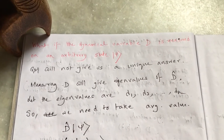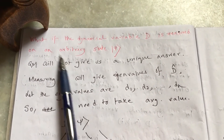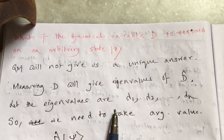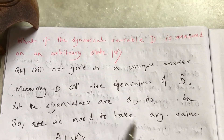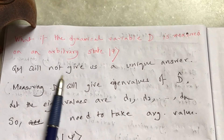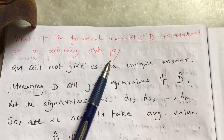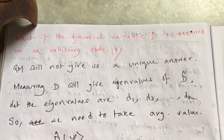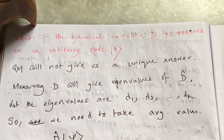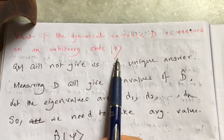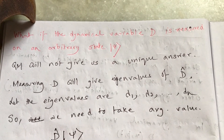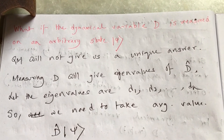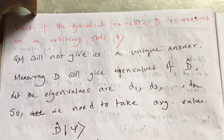Let's find out what will be the values of the dynamical variable d when I measure d on an arbitrary state ψ. What does that mean? ψ is a general state — it is a linear combination, a mixture of many states. Suppose ψ is a mixture of five states.